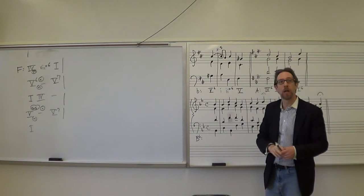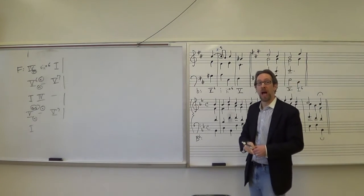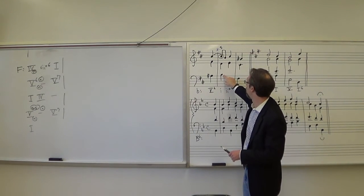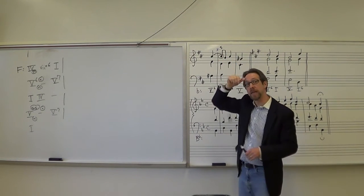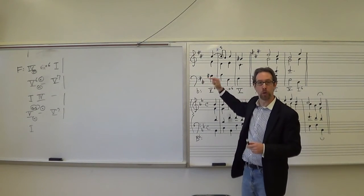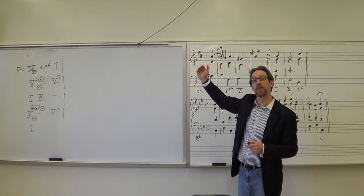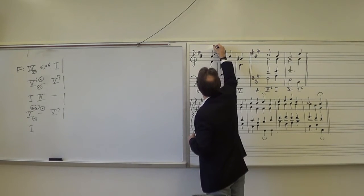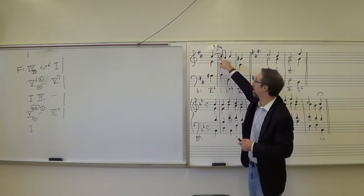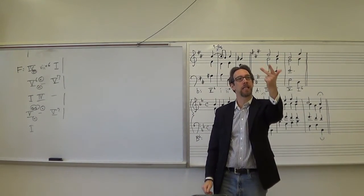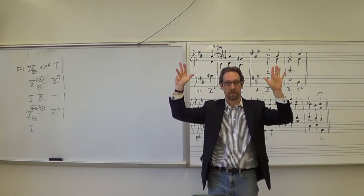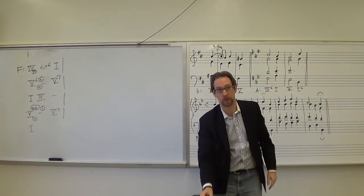To label what kind of suspension, we use figured bass — Arabic numerals measuring intervals from the bass up. B to C is an interval of a ninth (we use the compound interval rather than a second), and it resolves to an eighth. So this is a 9-8 suspension. Count on your fingers: B, C, D, E, F, G, A, B, C — we get a ninth, going to a B — an eighth. So 9-8 suspension is how we label that.